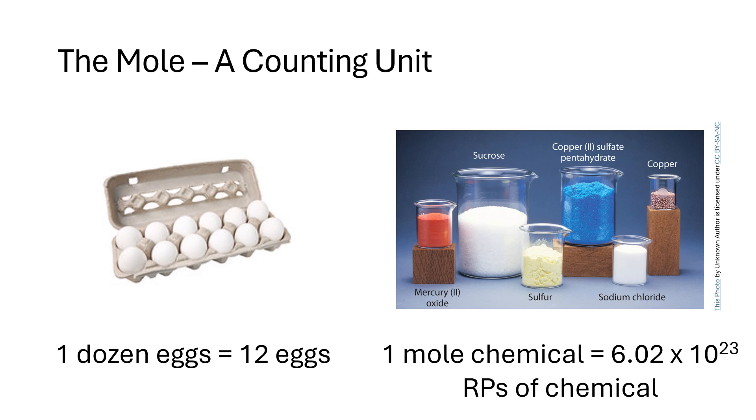So the mole is what chemists use as a counting unit. You're used to counting units for eggs, right? Eggs are normally sold as dozens. Donuts are sold as dozens. And we understand that a dozen means 12. So if you have one dozen eggs, you're going to have 12 eggs. So a dozen is equivalent to the number 12. You could have a dozen donuts, and that would mean you have 12 donuts. So the chemist's counting unit is called a mole. And a mole means that you have 6.02 times 10 to the 23rd representative particles of whatever chemical substance you have.